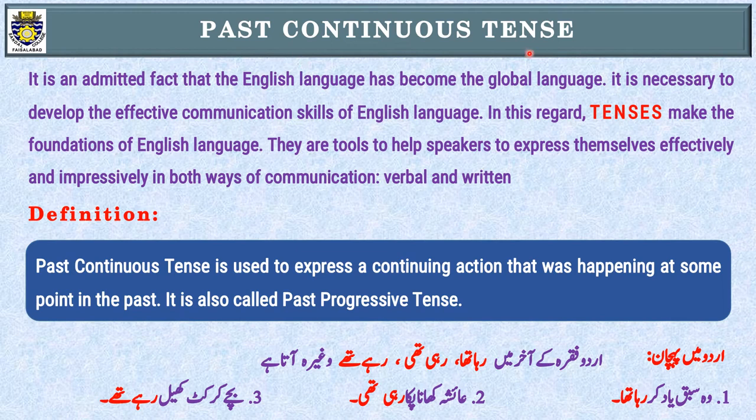یعنی وہ سبق یاد کر رہا تھا — اب نہیں کر رہا، ماضی میں کسی وقت کر رہا تھا، اور وہاں ہی اس کا action complete ہو گیا۔ عائشہ کھانا پکا رہی تھی — اب نہیں، ماضی میں کسی وقت پکا رہی تھی۔ اسی طرح بچے کرکٹ ماضی میں کسی وقت کھیل رہے تھے۔ یہ اس کی پہچان ہوگی Past Continuous Tense کی۔ اب دیکھتے ہیں کہ Past Continuous Tense کا formula کیا ہے، اس کی construction کیسے ہوتی ہے۔